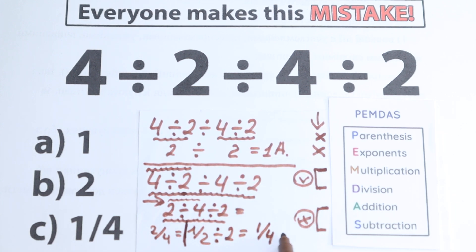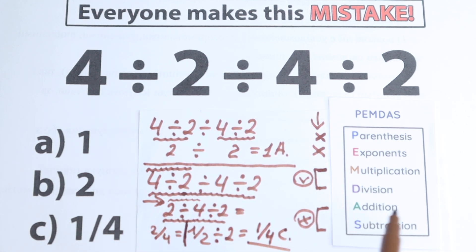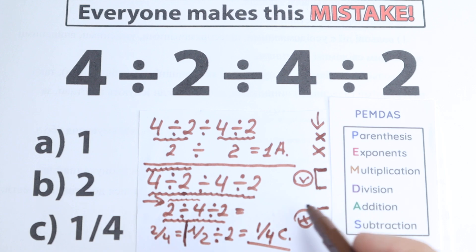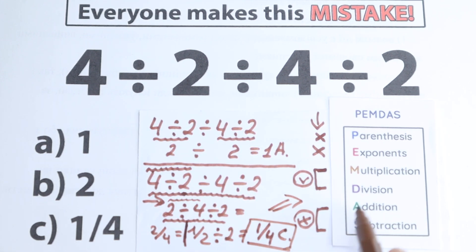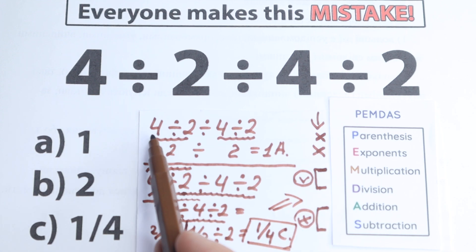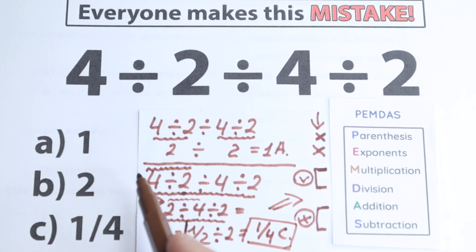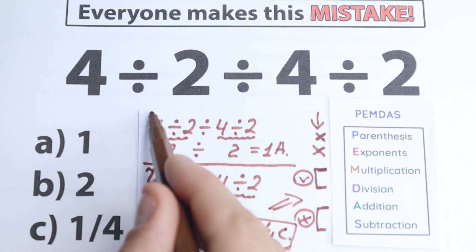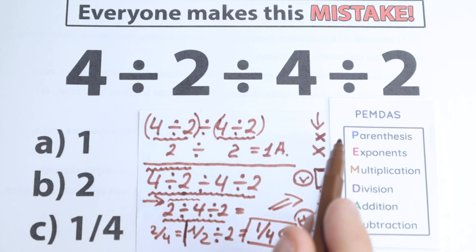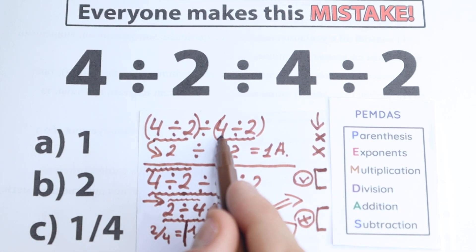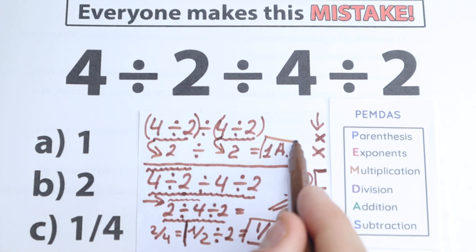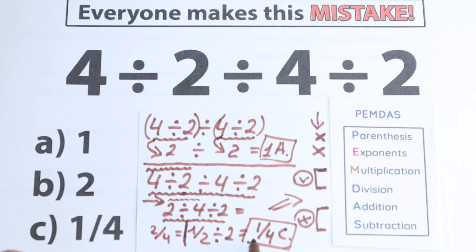So the solution is 1/4 — Option C. Which one is correct: Option A (1) or Option C (1/4)? Of course, 1/4 is absolutely the correct answer because we solved it according to the correct order of operation. Jumping between sides arbitrarily is incorrect. If you wanted Option A to be correct, you would need to add parentheses. Without parentheses, the correct answer is Option C — 1/4.